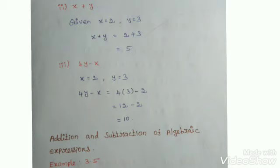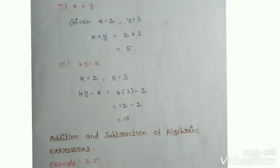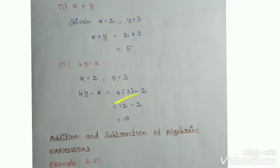Same question with X equals 2 and Y equals 3. Second expression: X plus Y. Substituting: 2 plus 3 equals 5. Third expression: 4Y minus X. Substituting: 4 into 3 minus 2, which is 12 minus 2 equals 10.